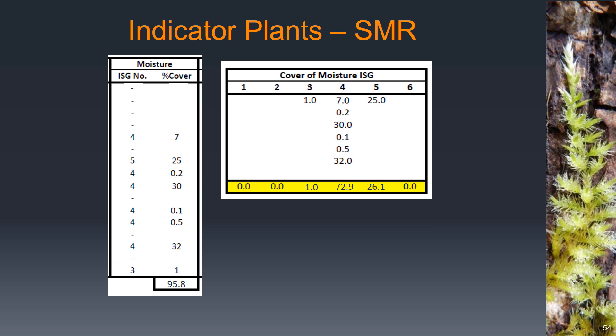For the next step, we need to divide up those percent covers by indicator species group. In the table on the right, I've entered all of the percent cover values based on which species group they were in. For group 3, we only had one entry and it was 1. For group 4, we had quite a few — 7.2, 30, and so on. We enter them all in, add up each of those columns, but then divide by that total of 95.8 to normalize the values so they now sum to 100, accounting for the fact that we didn't initially have values that summed to 100.